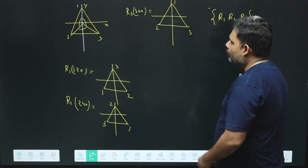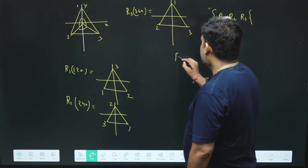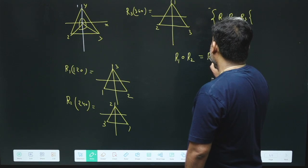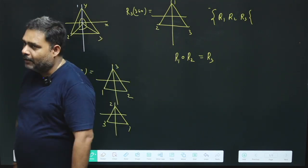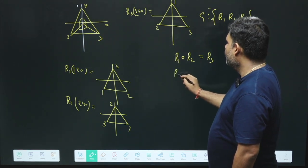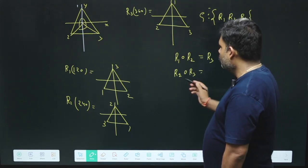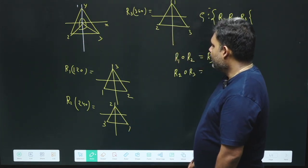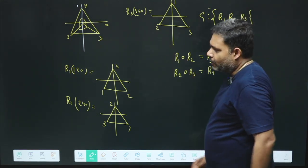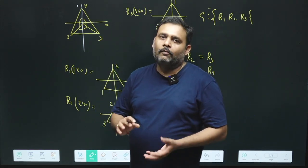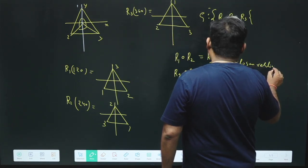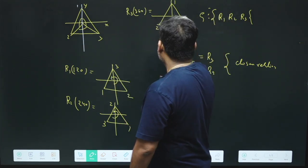First, we check whether they follow the closure relation. If we rotate by 120 degrees and then by 240 degrees, the complete rotation is 360 degrees, which is R3 — an element of this group. Similarly, R2 followed by R3 means rotating by 240 degrees and then 360 degrees, giving us R2. All results of combining R1, R2, and R3 belong to the same group, so they follow the closure relation. We are assuming rotation is in the anticlockwise direction.